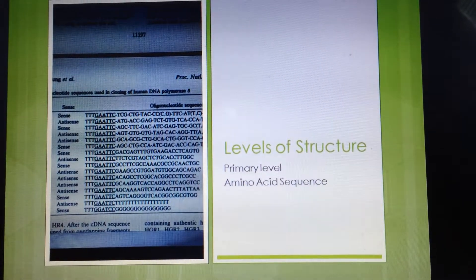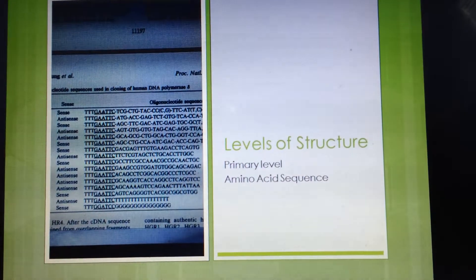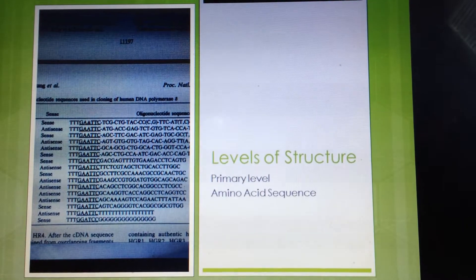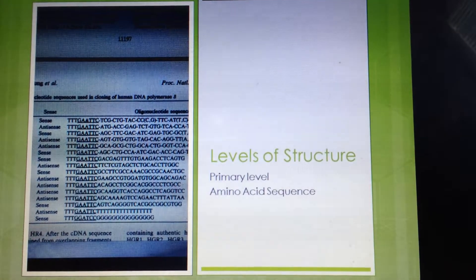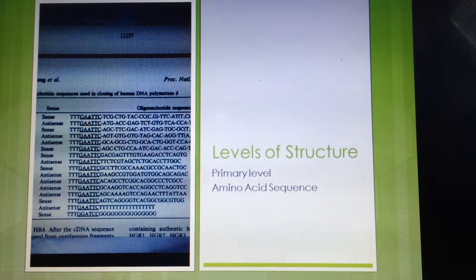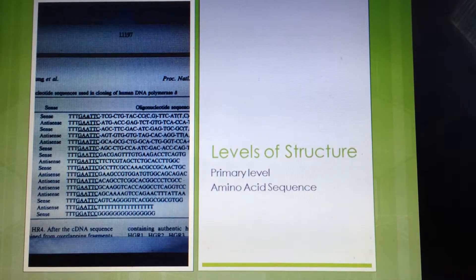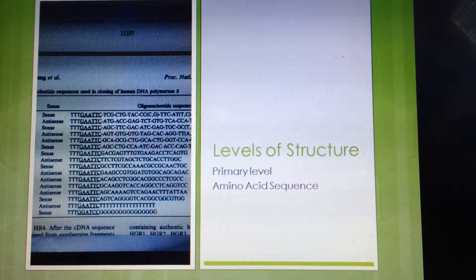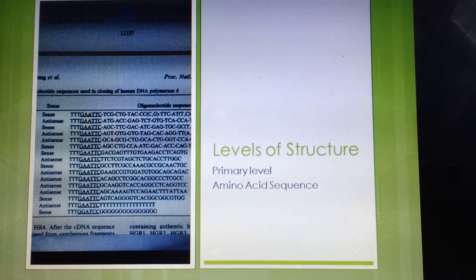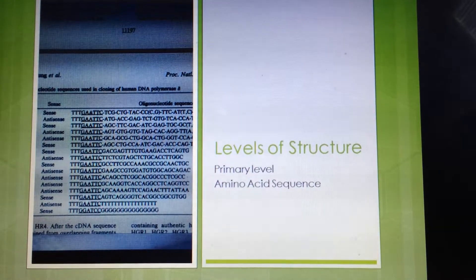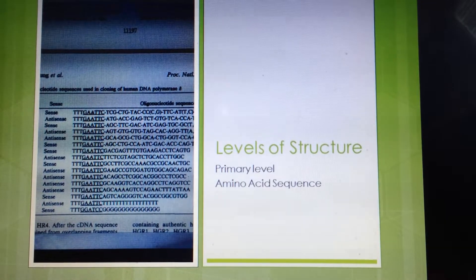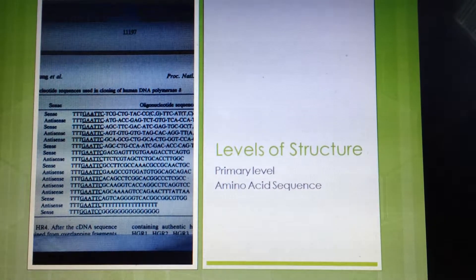Moving on to the levels of structure for DNA polymerase. The primary level of structure — the amino acid sequence — shows that methionine is usually the predominant amino acid. Also in the sequence, you will find amino acids like valine, leucine, and isoleucine. The figure shown is a human amino acid sequence of DNA polymerase.